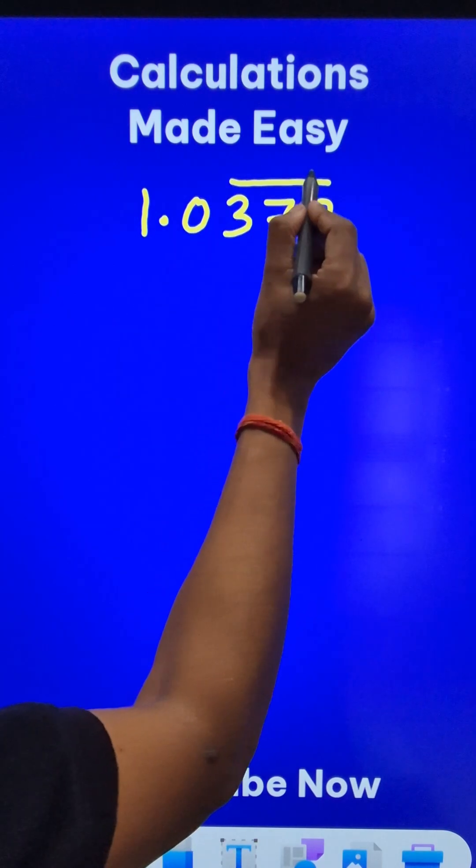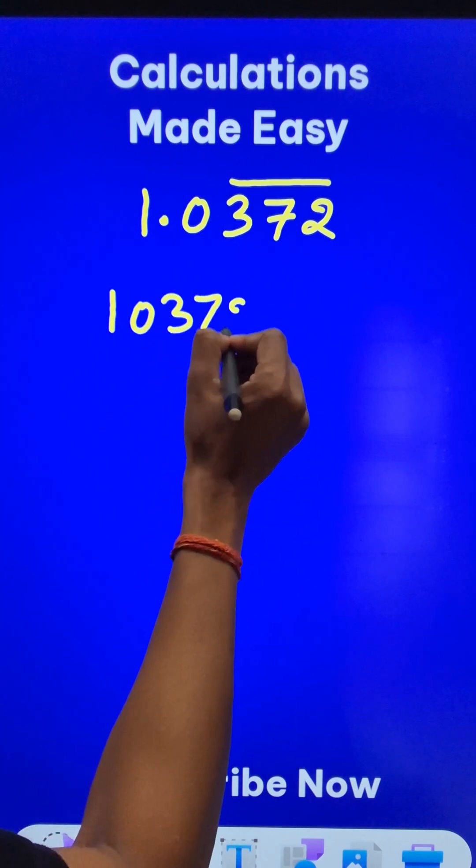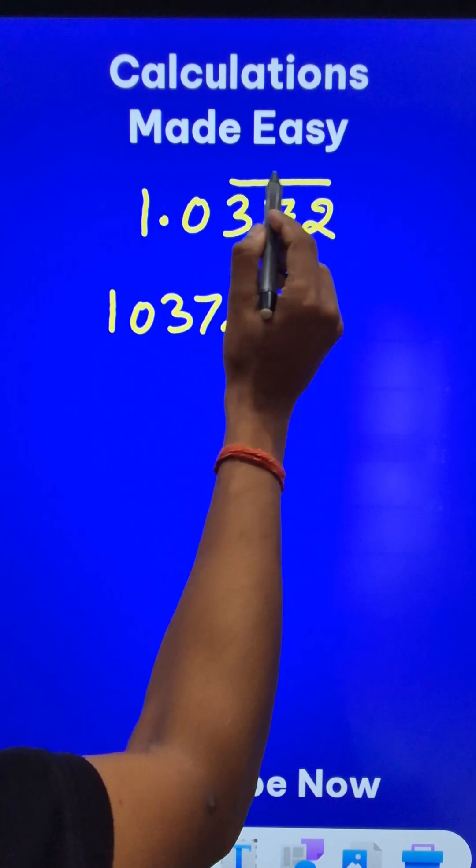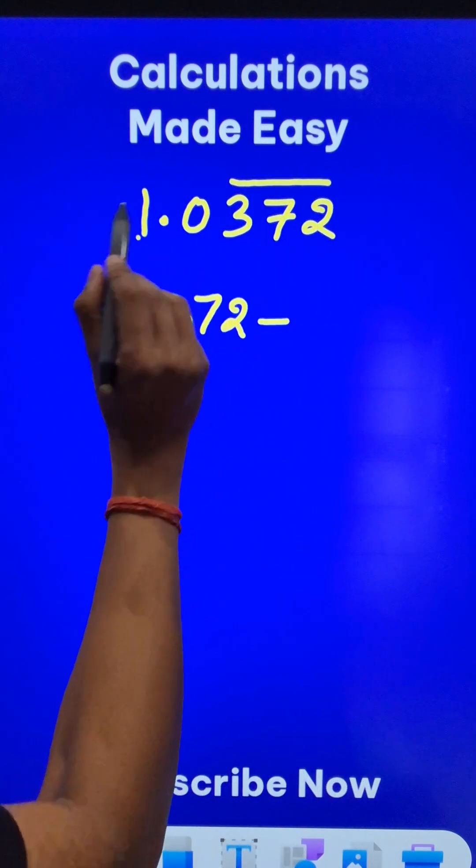The first thing is just ignore the bar and the decimal. You get 10372 and then ignore the digits on which there is a bar. So 372 is to be ignored. So we have 10, that is 10.